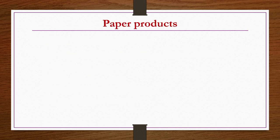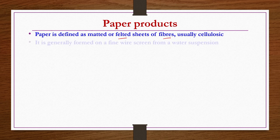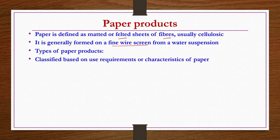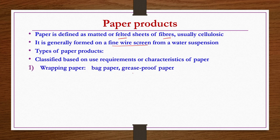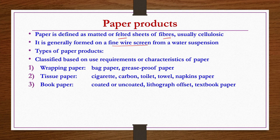Paper is defined as matted or felted sheets of fibers, usually cellulosic, generally formed on a fine wire screen from a water suspension. Types of paper products are classified based on requirements or characteristics: wrapping papers include bag paper and grease-proofing paper; tissue papers include cigarette, carbon, toilet, towel, and napkin papers; book papers include coated or uncoated, lithograph, offset, and textbook papers.